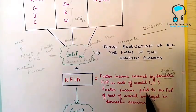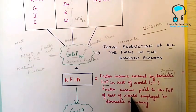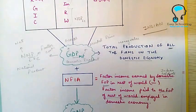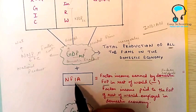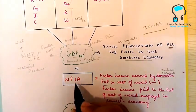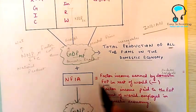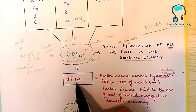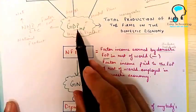So if there are some foreign companies, their income has to be subtracted. You have to add the income earned by Indians working in rest of the world and subtract the income paid to the rest of the world, to the factors of production of rest of the world, to the foreigners who are working in the domestic economy. That is going to give you NFIA, that is net factor income from abroad. Net means income received minus income paid.